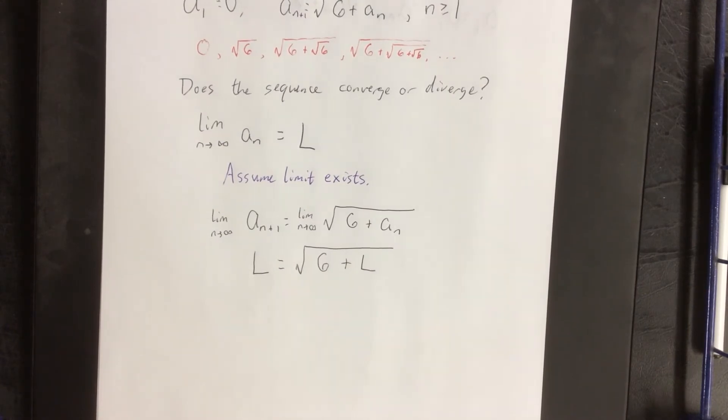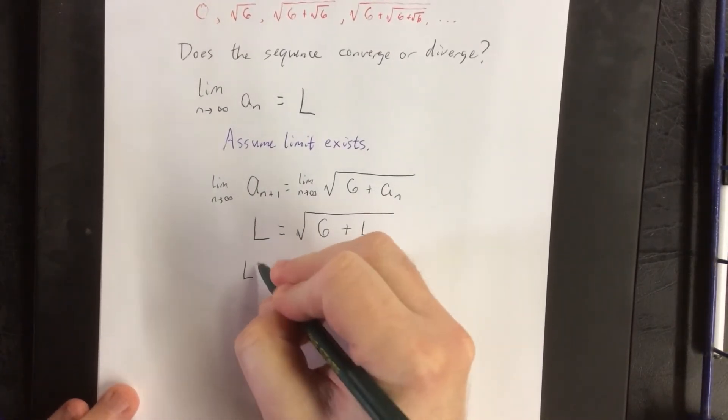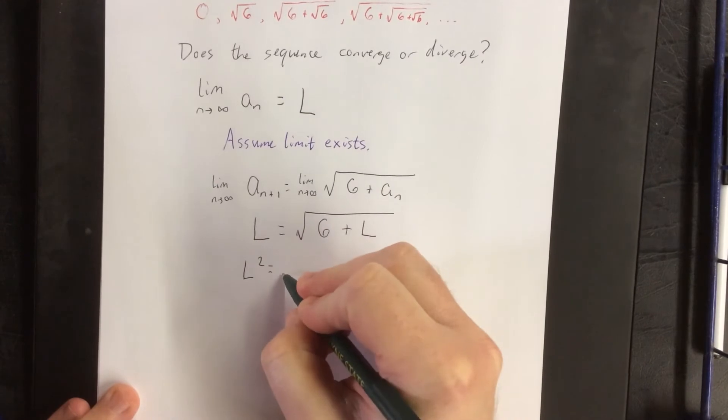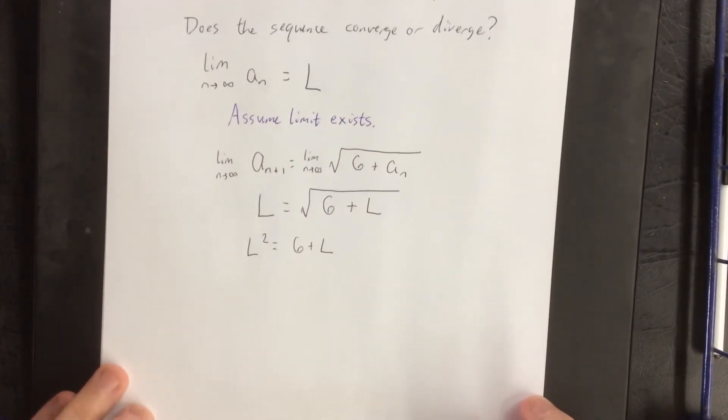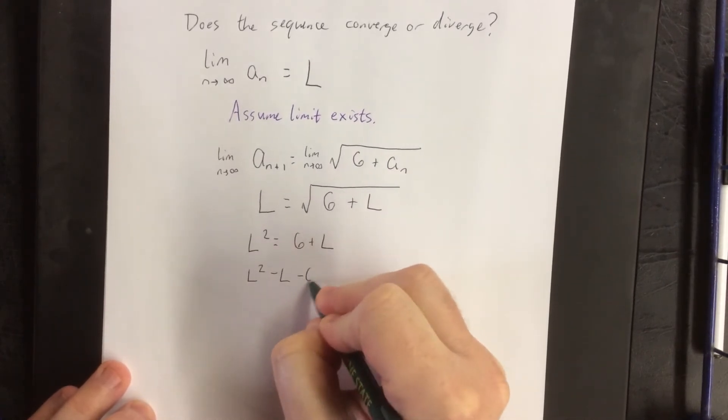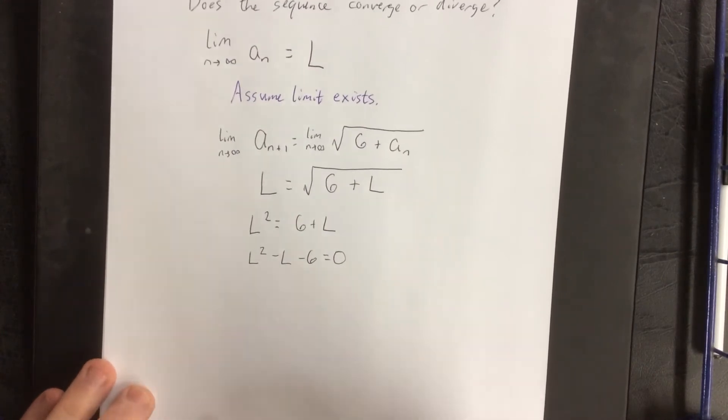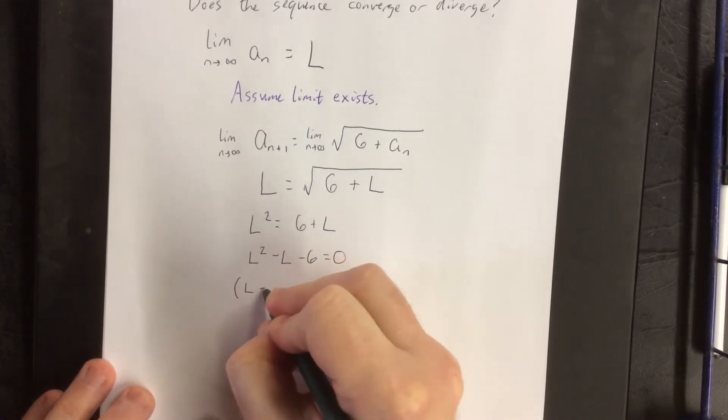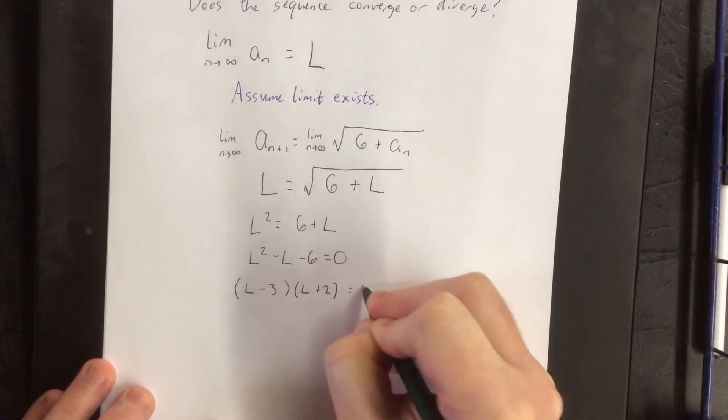This gives you an equation in terms of L that you should be able to solve for L. The way that we'll solve for L is square both sides to eliminate the radical and then get a zero on one side since we're now dealing with something that is quadratic. This happens to factor pretty nicely so let's do so. That'll be L minus 3 times L plus 2 equal to 0.